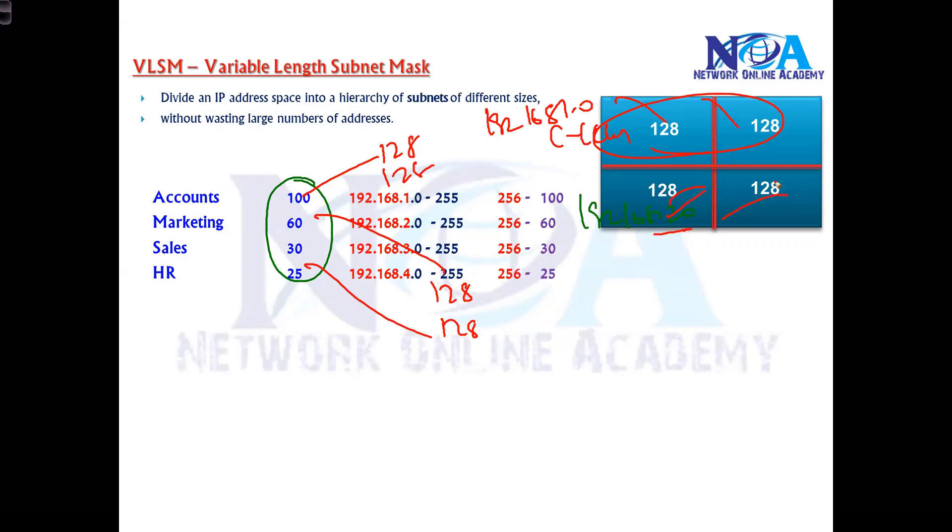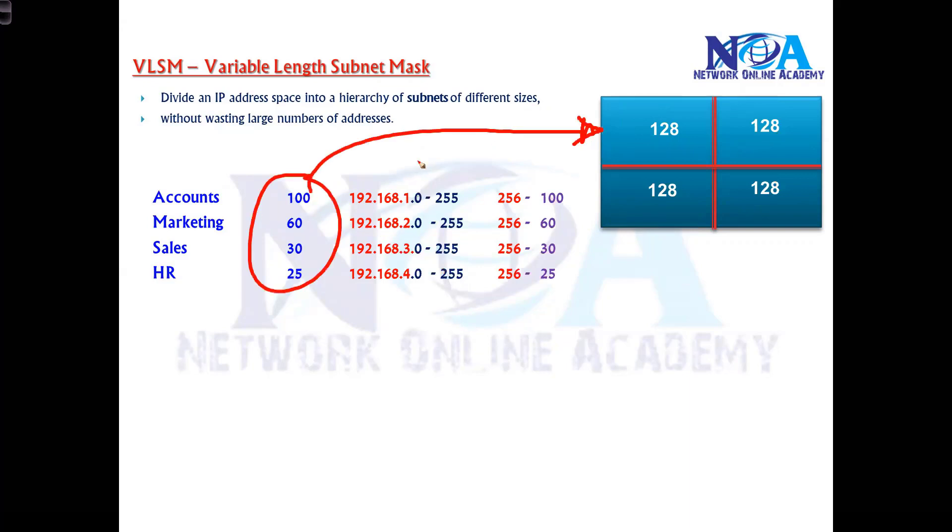In FLSM, we had to go with a fixed length subnet mask where all networks will have the same size. The number of bits will be the same and the subnet mask will be the same, because the subnet mask tells the size of the network and how many host bits.